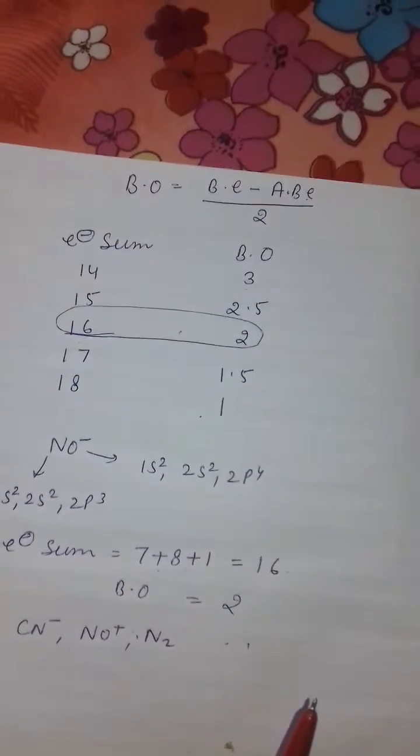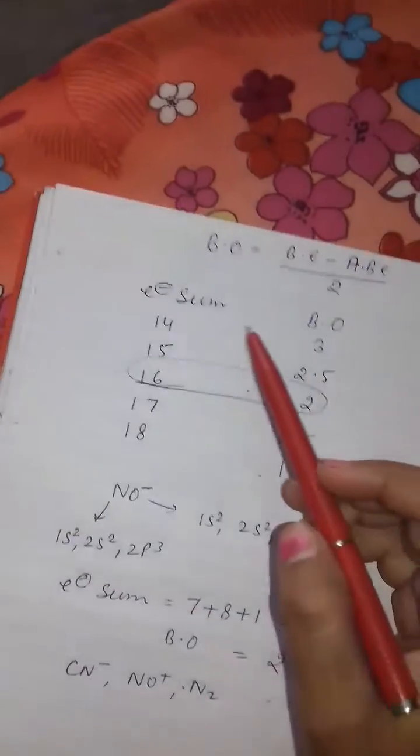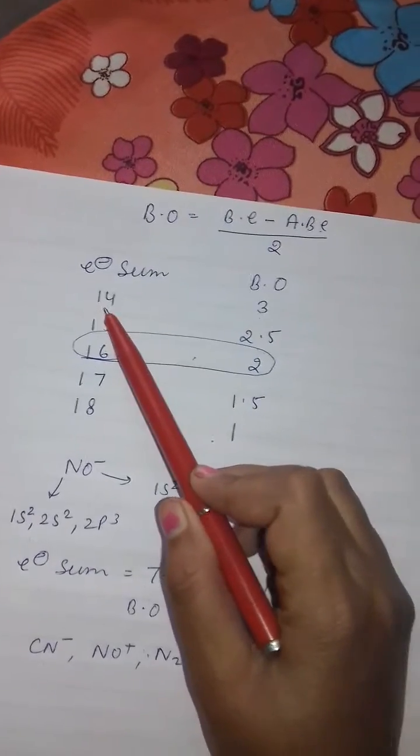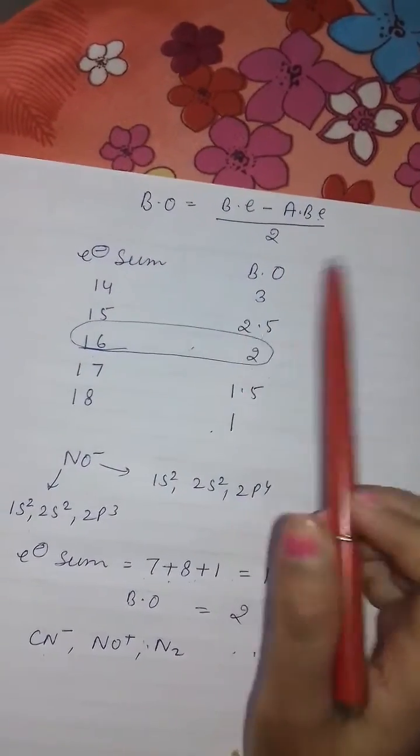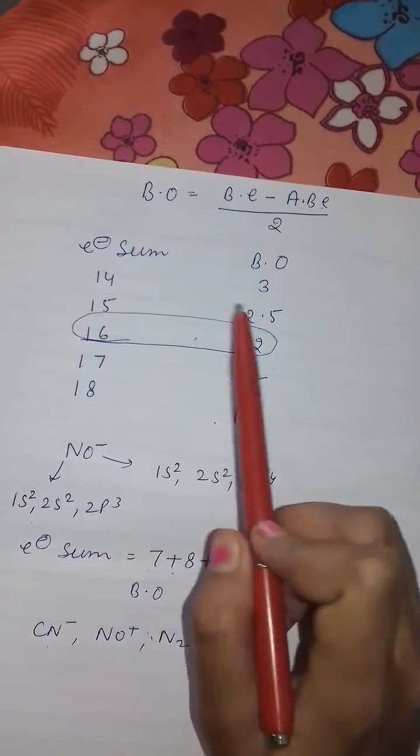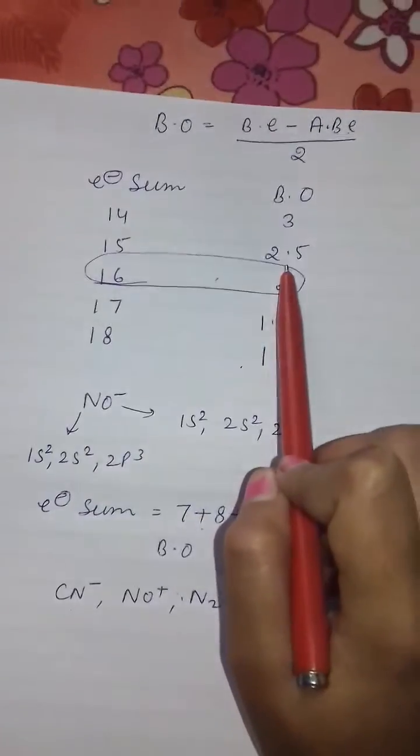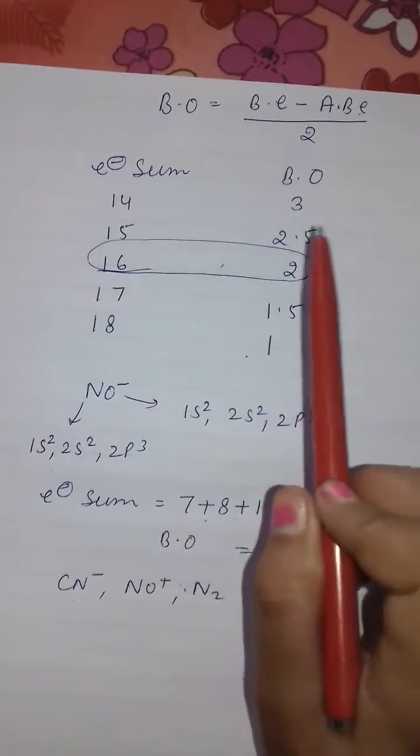But in this trick we should remember only one thing, that is electron sum. If electron sum is 14 then bond order will be 3. If electron sum is 15 then bond order will be 2.5. If electron sum is 16 then it will be 2.